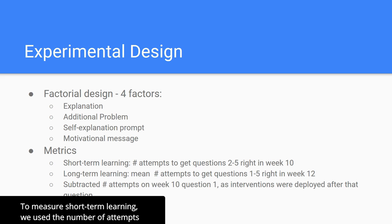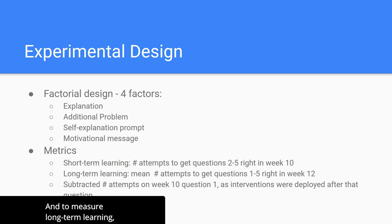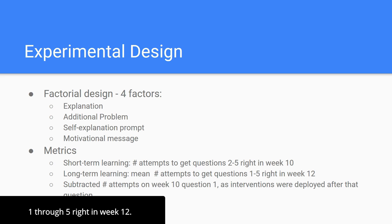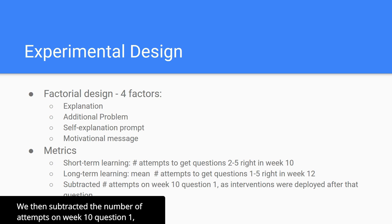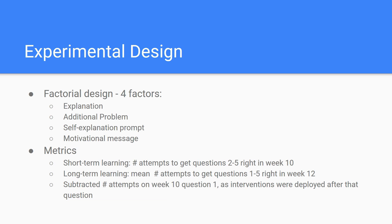To measure short-term learning, we used the number of attempts to get questions two to five right in the week 10 exercise. And to measure long-term learning, we used the mean number of attempts to get questions one through five right in week 12. We then subtracted the number of attempts on week 10 question one, as the interventions were deployed after that question.